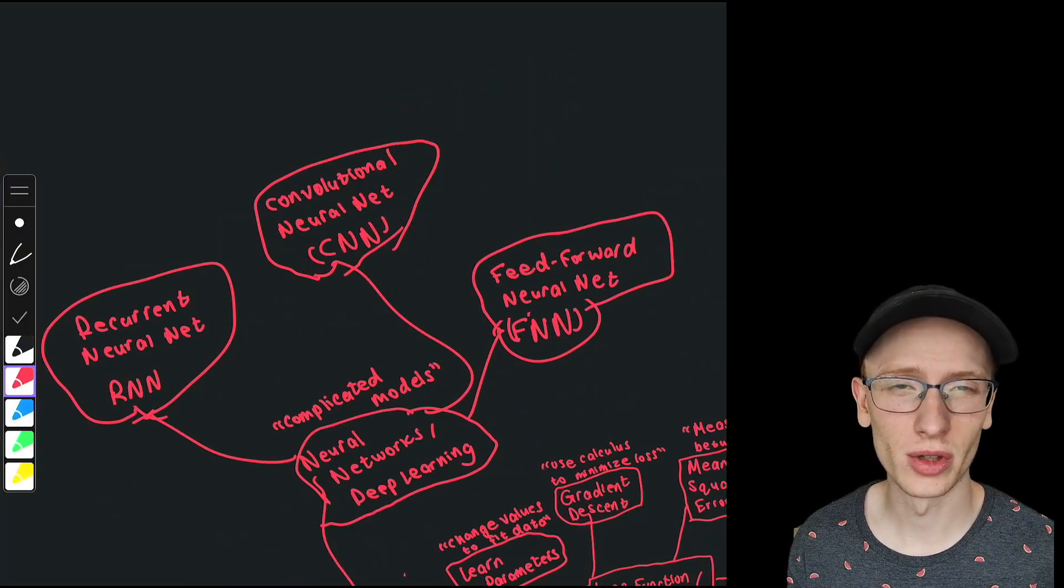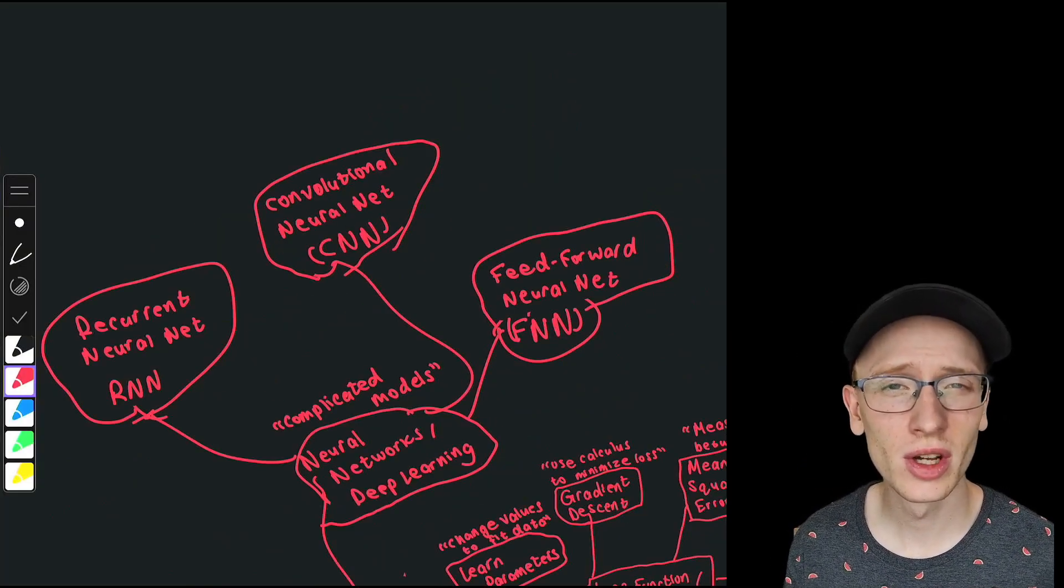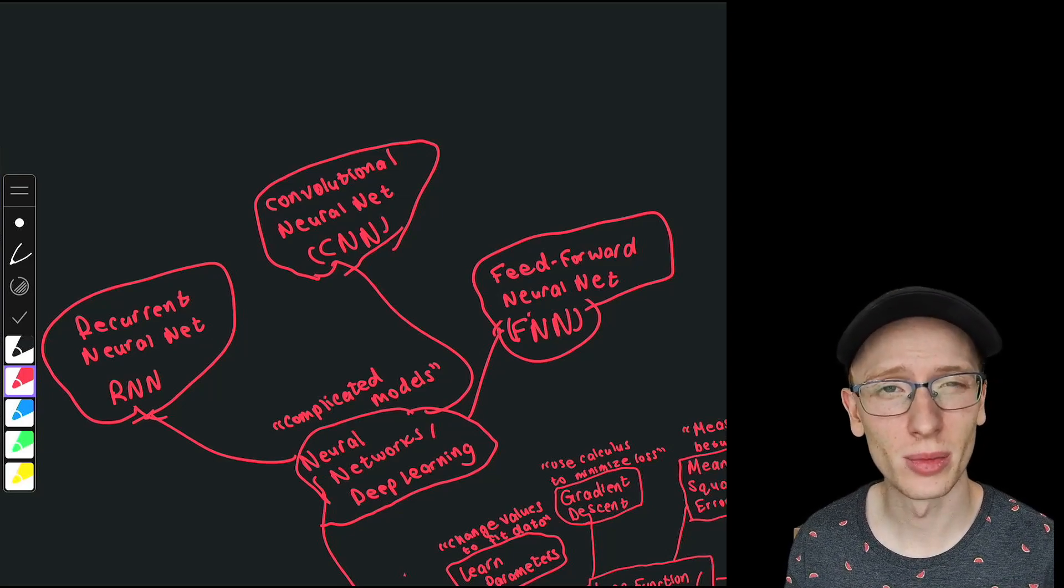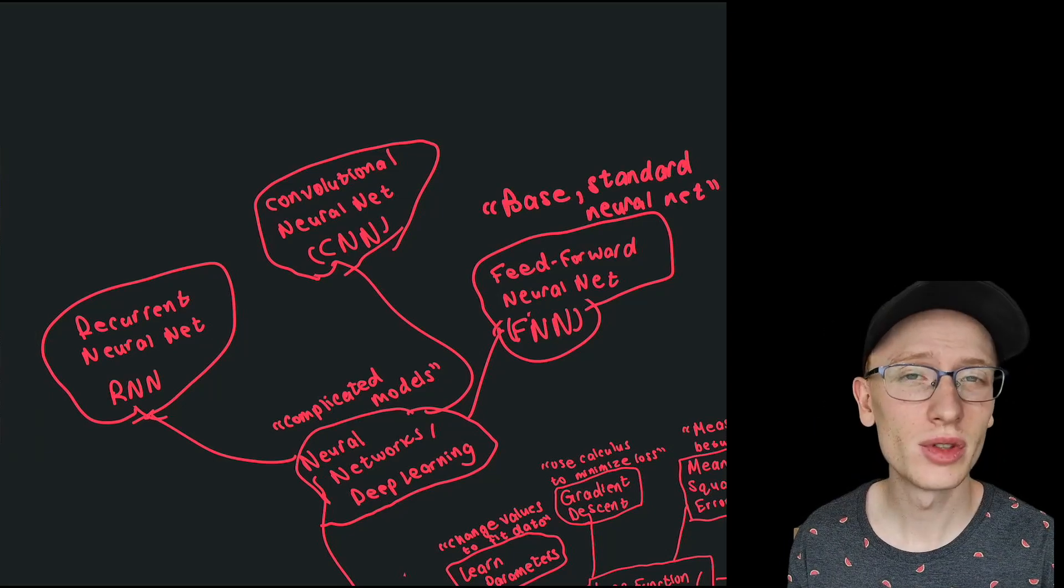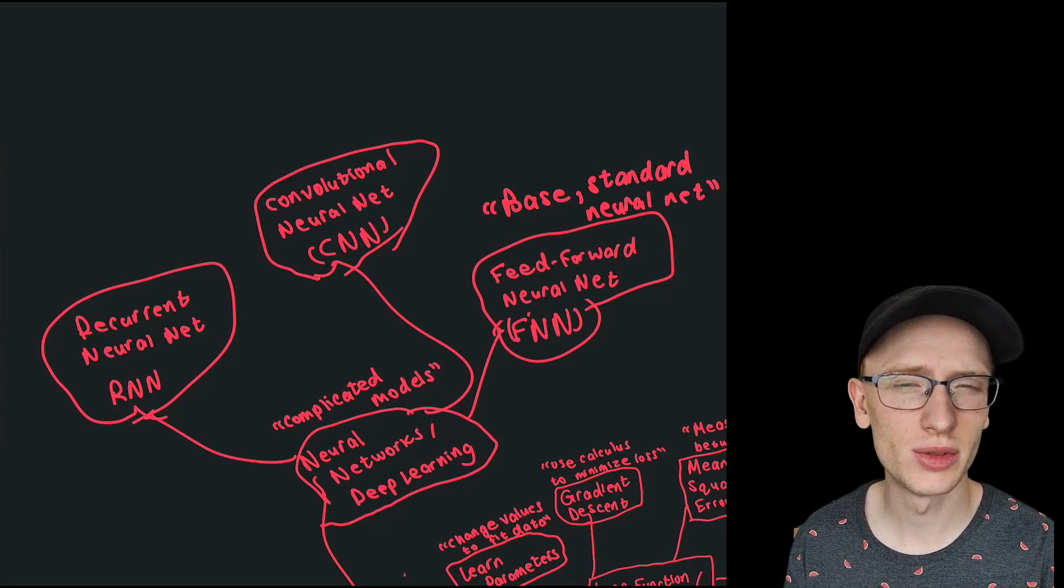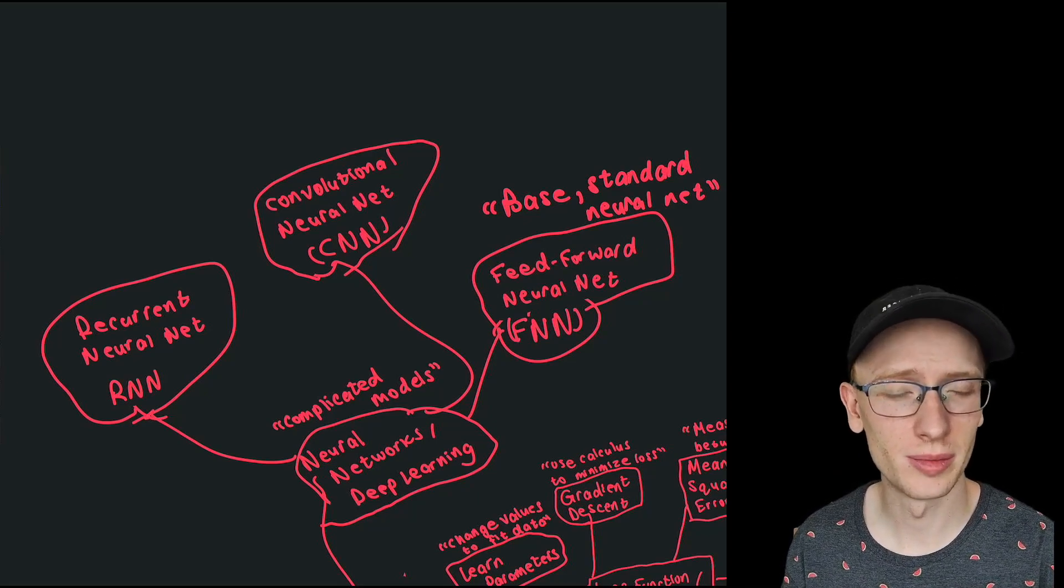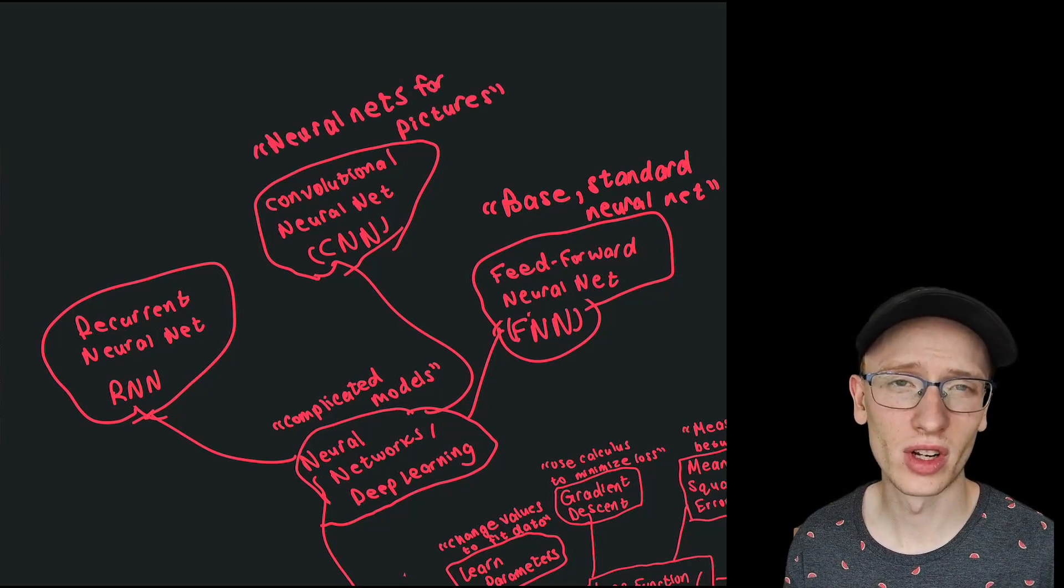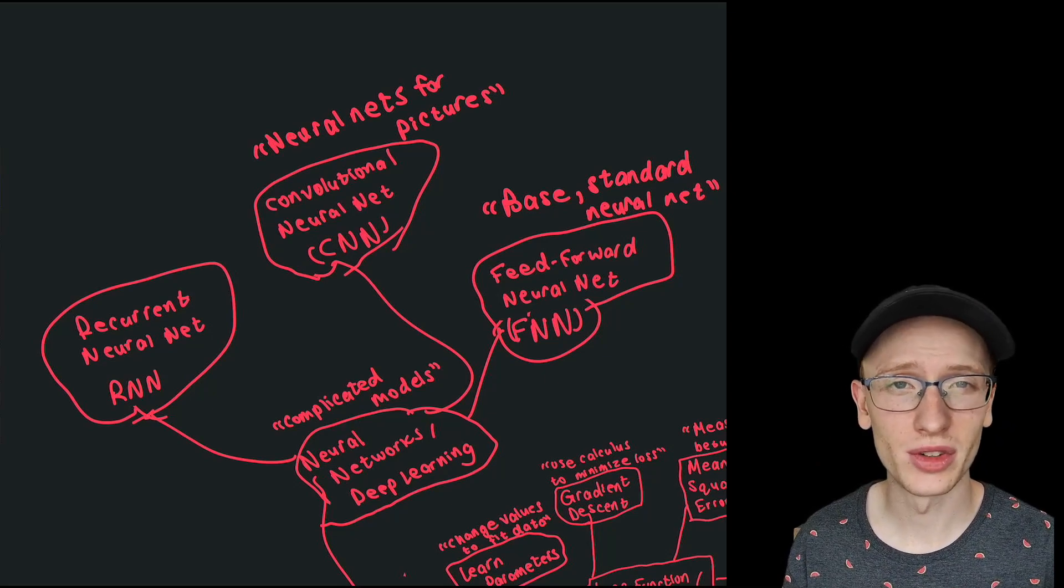Starting with feed forward neural network, we generally think of these as the standard base model that can solve many different problems. For convolutional neural networks, there's other applications, but generally they are for picture data. And for recurrent neural networks, we generally use those for time series data.